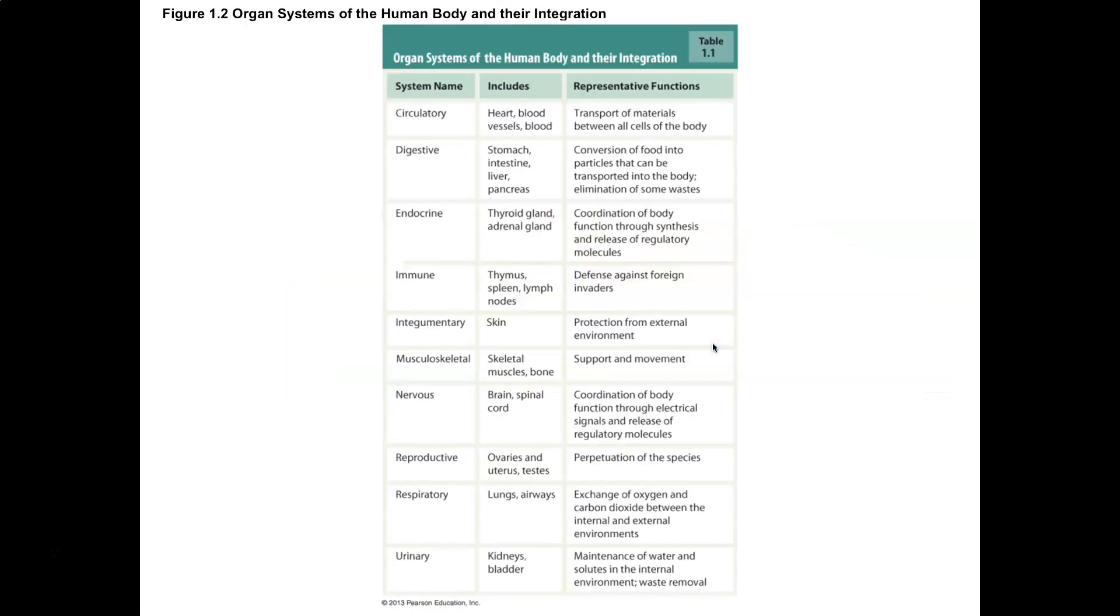We also have a review of organ systems, always a good idea to go through and review what is the circulatory system, what structures make up the circulatory system - heart, blood vessels, blood. What is its basic functionality - transport, regulation, protection. Then we have digestive system, and again, corresponding structures and their representative functions.